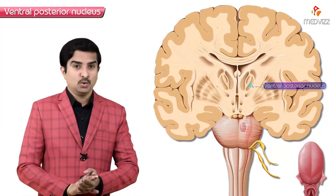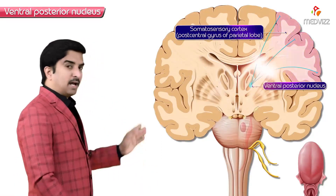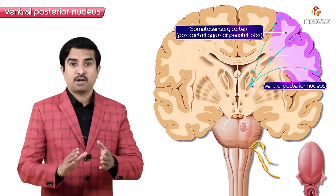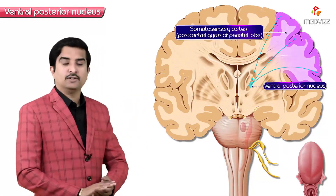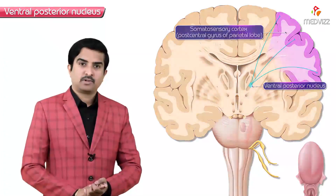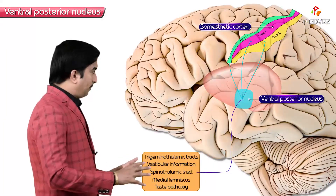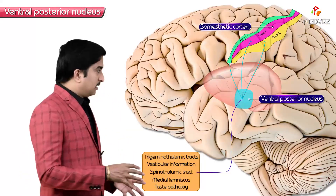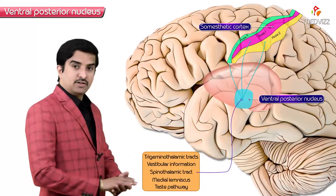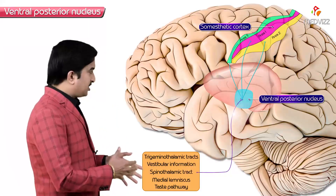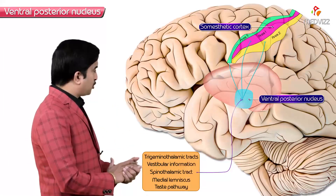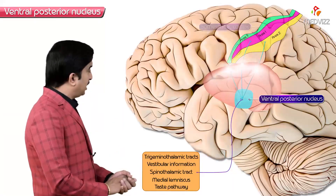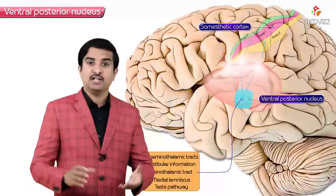The ventral posterior nucleus projects to the primary somatosensory cortex in the post-central gyrus of the parietal lobe. These are the efferents of the nucleus. All sensations carried by the ventral posterolateral and ventral posteromedial nuclei terminate in the somatosensory area of the cerebral cortex, which is areas 3, 1, and 2.